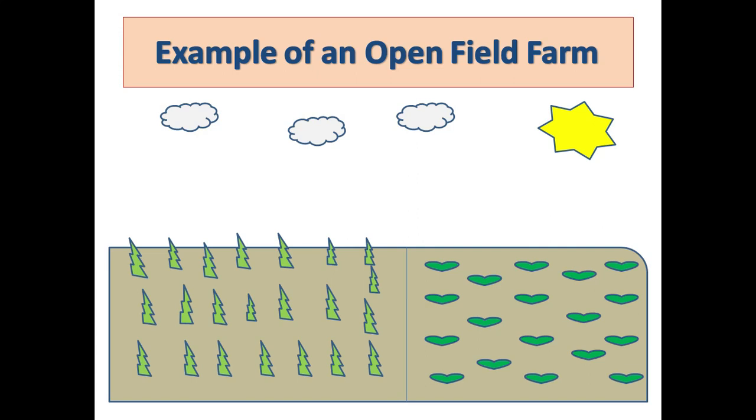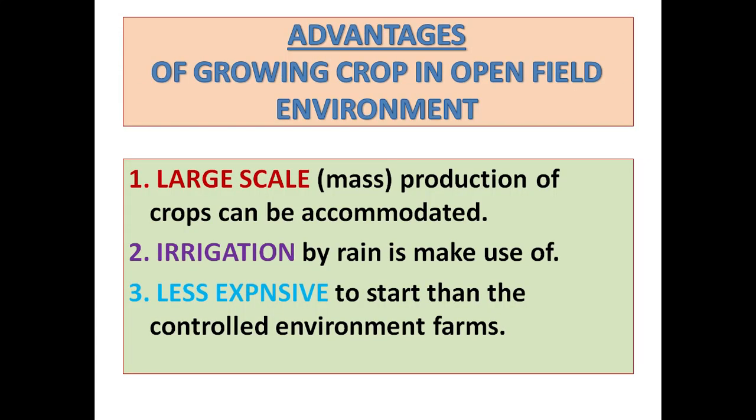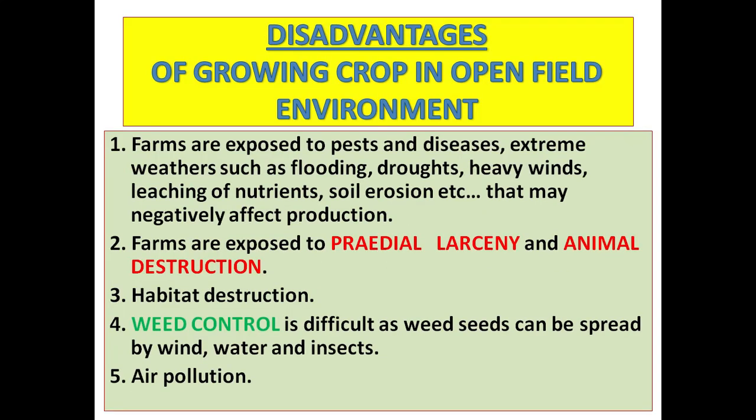Advantages of growing crops in an open field environment: number one, large-scale mass production of crops can be accommodated; number two, irrigation by rain is made use of; number three, less expensive to start than the controlled environment farm.